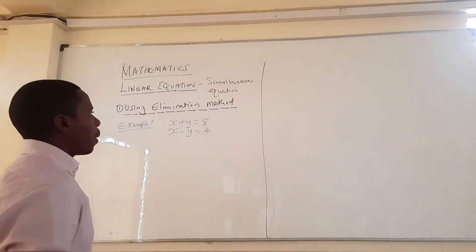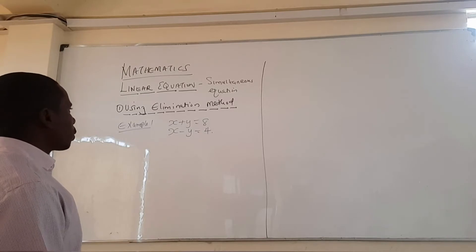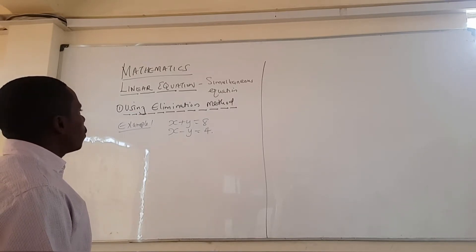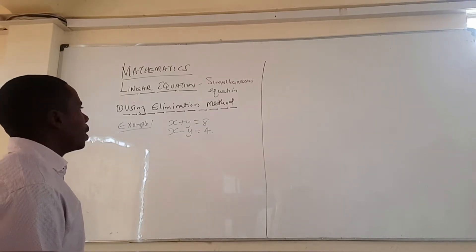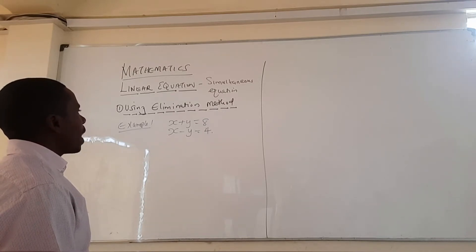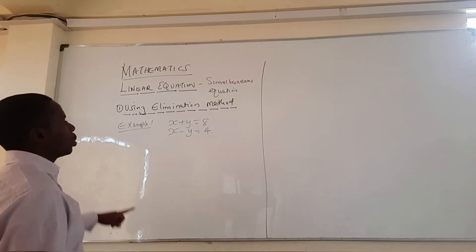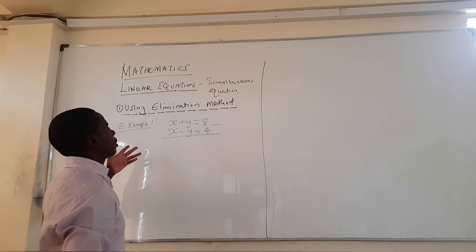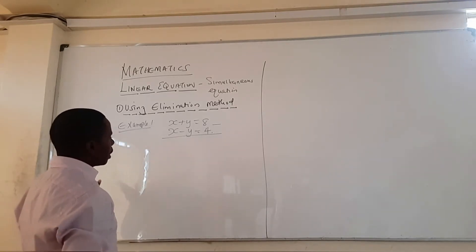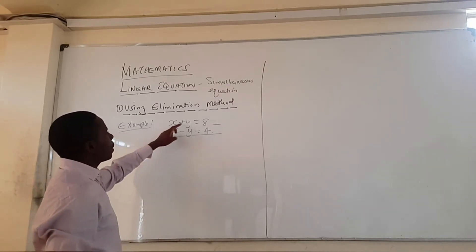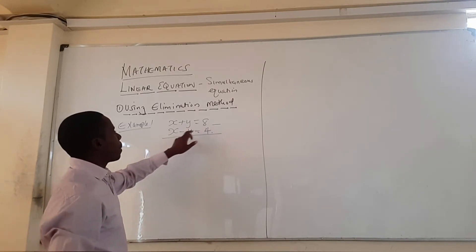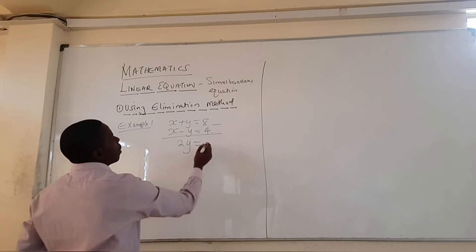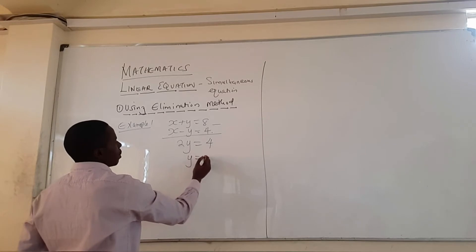We need to get rid of x or y. To get rid of x, I can subtract the two equations so that x minus x is zero — it has been eliminated. So x minus x is zero. Then y minus minus y: minus times minus is plus, so I'm going to have 2y. Then 8 minus 4 is 4, so 2y equals 4, meaning y equals 2.